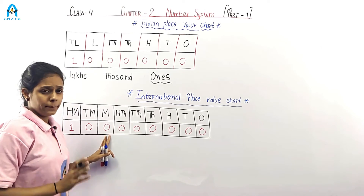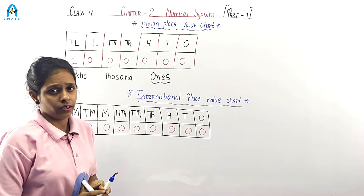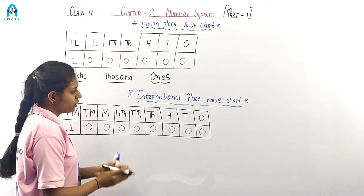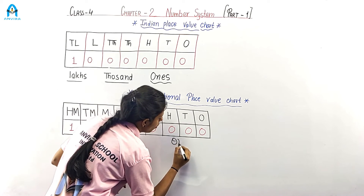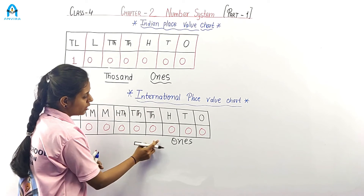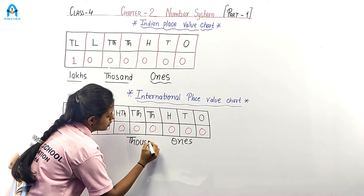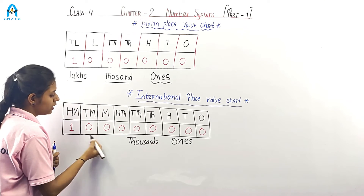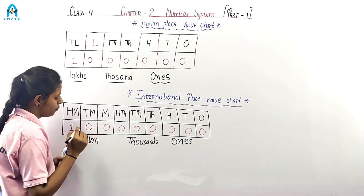After ten thousands, the international system changes: hundred thousands, million, ten million, and hundred million. Now, classifying these into periods: the first three places make the ones period. The next three — thousands, ten thousands, hundred thousands — make the thousands period. The next three make the millions period.